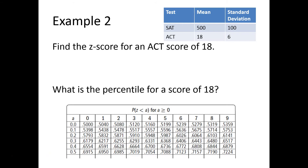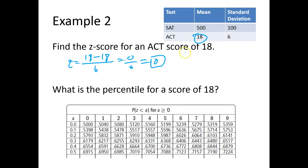We have the z-score for an ACT score of 18. Since the average is 18, make a hypothesis: how many standard deviations away are we? It should be 0. Let's calculate: z equals 18 minus 18 over 6, which is 0 over 6, which is 0. If we go to our chart, z equals 0.0 gives 50%. So you are at the 50th percentile — 50% of the data lie below that z-score.